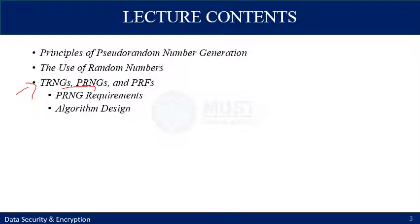One of the main functions of a cryptographic algorithm is the generation of random bit streams. Random bit streams are used in a wide variety of contexts including key generation and encryption. One strategy computes bits independently using a deterministic algorithm, known as a deterministic random bit generator. The second strategy produces bits non-deterministically using a physical source that produces random output, known as a true random number generator.